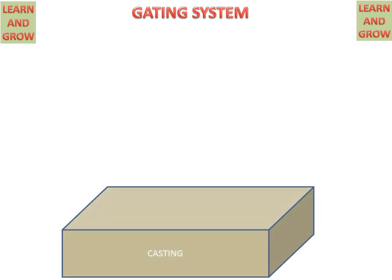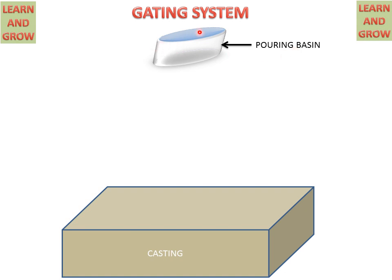We have a casting — this casting is the product when molten metal will be filled in it. This is the pouring basin, which is used for pouring molten metal, and it prevents the splash of the molten metal which could harm the operator.